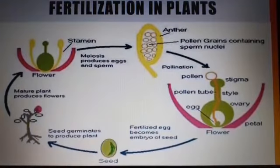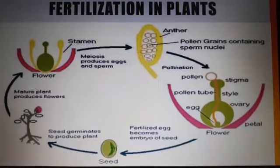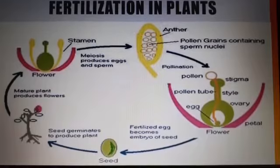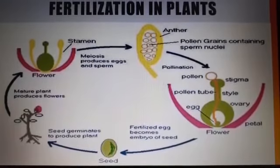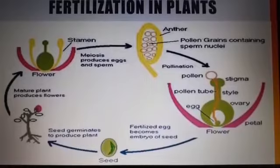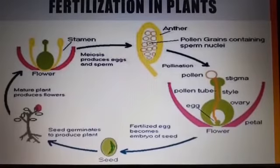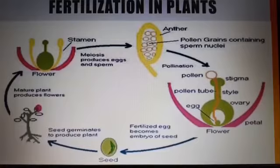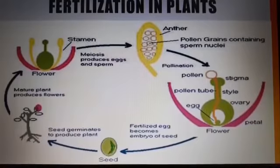As we know, the surface of the stigma in a flower is sticky, so the pollen grains get stuck to it. These pollen grains grow outward to form the pollen tube. These pollen tubes contain the sperms.